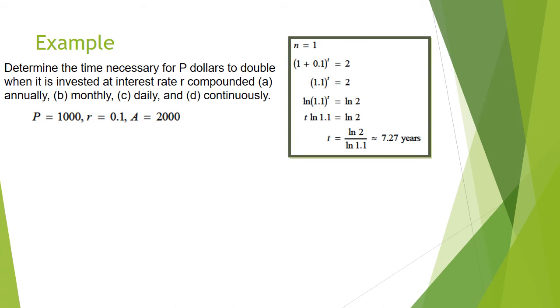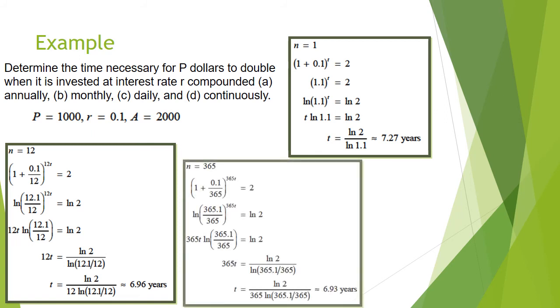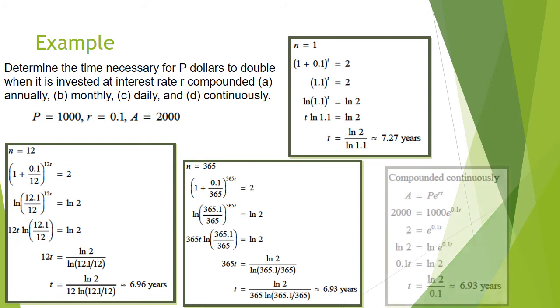So for N equals 1, that's annually, we find that it's going to be 7.27 years. When N is 12, this is part B, monthly, we get 6.96 years. When it's 365, we get 6.93 years, and continuously actually is the same as 365 in this case. That won't always be true, but this time it is.